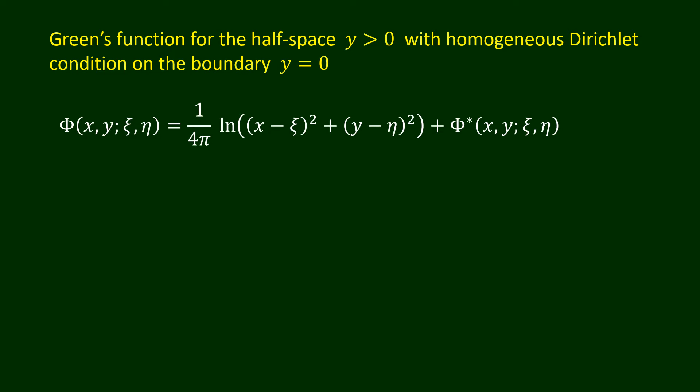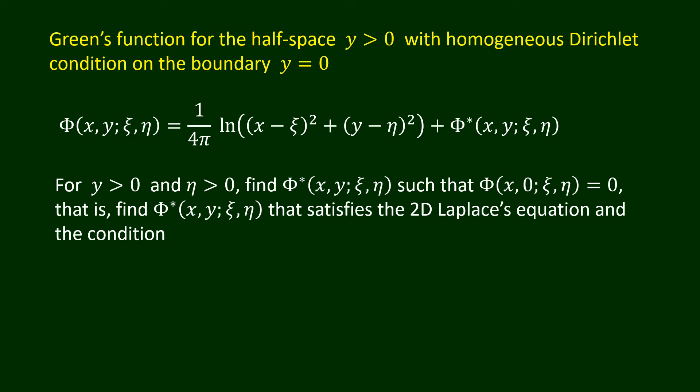For y strictly greater than 0 and eta strictly greater than 0, find the function capital Phi star such that capital Phi(x, 0, xi, eta) equals 0. That is, find capital Phi star that satisfies the two-dimensional Laplace's equation and the condition: capital Phi star(x, 0, xi, eta) equals minus (1 over 4 pi) times the natural log of (x minus xi) squared plus eta squared.